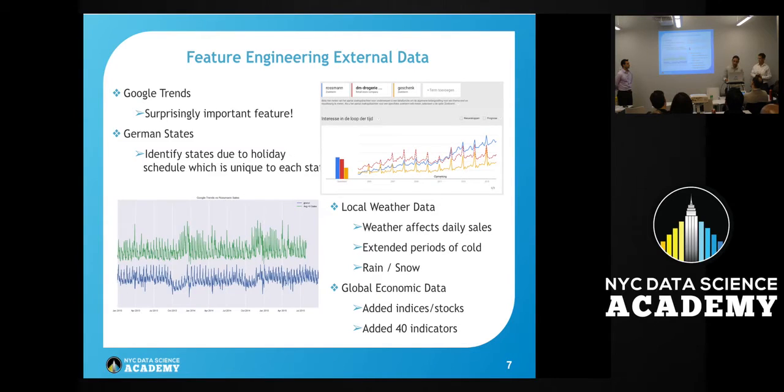Then we tried to gather more external data. We added Google Trends. As we have here, we have different Google Trends of Rossmann, DM, drugstores in general, and different benchmarks. You can see some correlation between the actual Google Trends and the sales. It was pretty remarkable to find that a feature like that was actually significant.